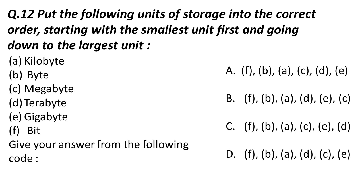The memory sizes given are: A — kilobyte, B — byte, C — megabyte, D — terabyte, E — gigabyte, and F — bit. Bit is the smallest unit among all the given options. The last and biggest is terabyte. We know that megabyte is less than gigabyte, and terabyte is more than gigabyte. The correct answer has F as first (smallest) and D as the highest (largest). The correct order follows option C. All you need is to remember at least two or three and you can arrange them.